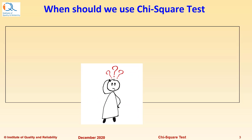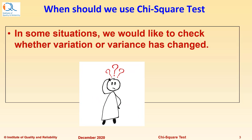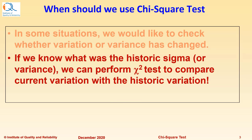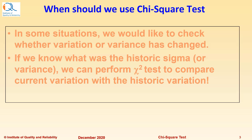When should we use the Chi-Square Test? In some situations, we would like to check whether variation or variance has changed. If we know what was the historic standard deviation or variance, we can perform Chi-Square Test to compare current variation with the historic variation.